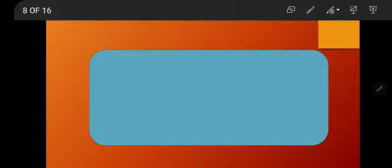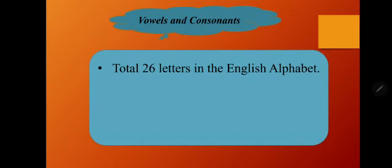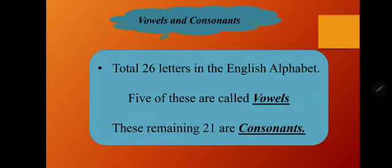Vowels and consonants. There are a total of 26 letters in the English alphabet. Out of these 26 letters, we have 5 vowels and 21 consonants.